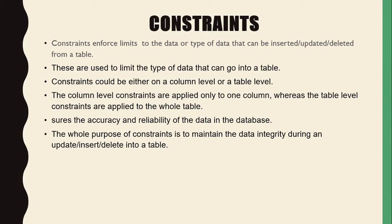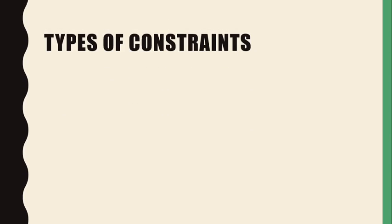Constraints mean limitations — what types of values to insert, what types of updates are performed, and ensuring that deleting a record does not affect other data. There are different types of constraints. The first is the key constraint: each entity has key attributes, and when we designate an attribute as a primary key or non-primary key, those are key constraints.